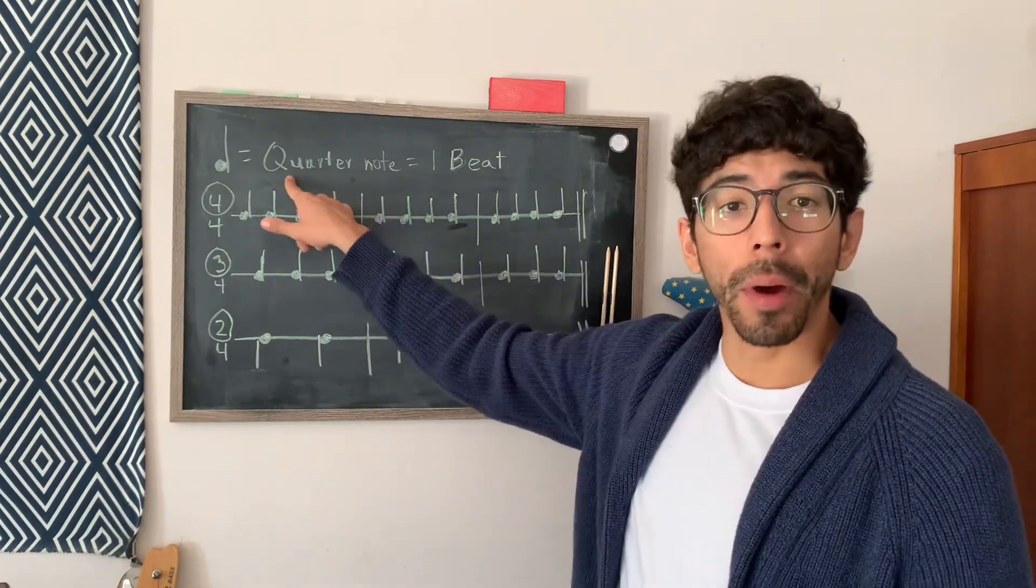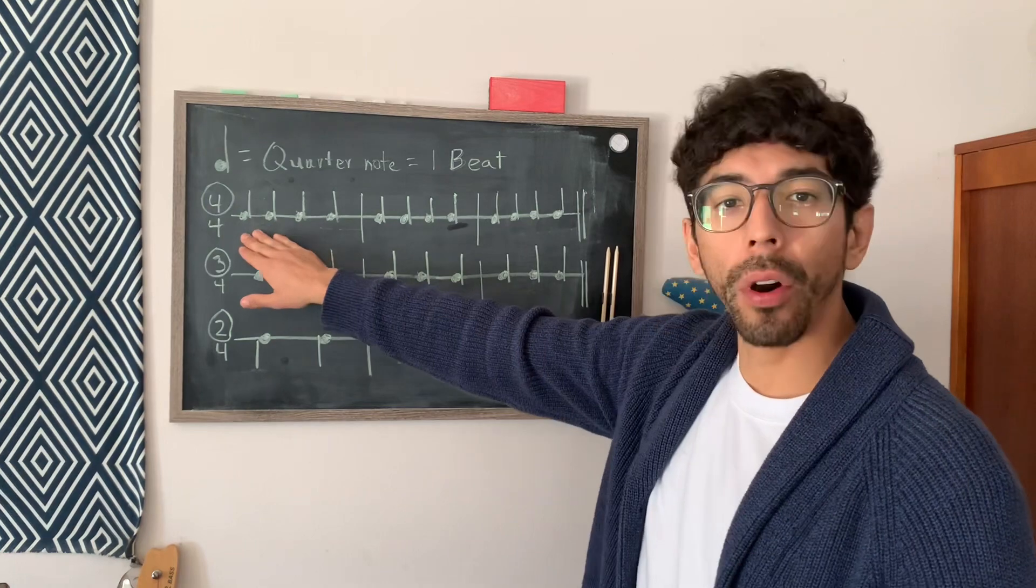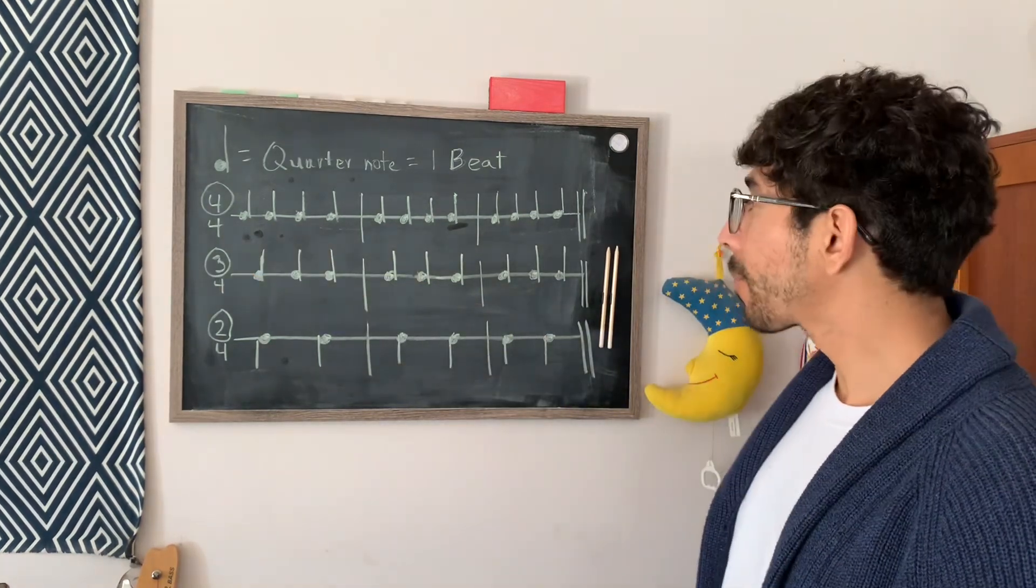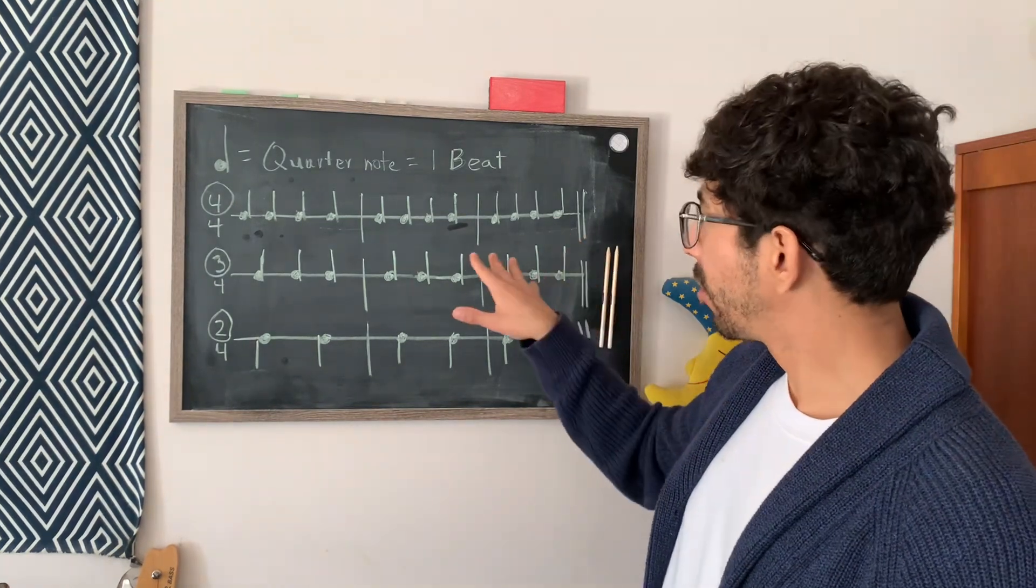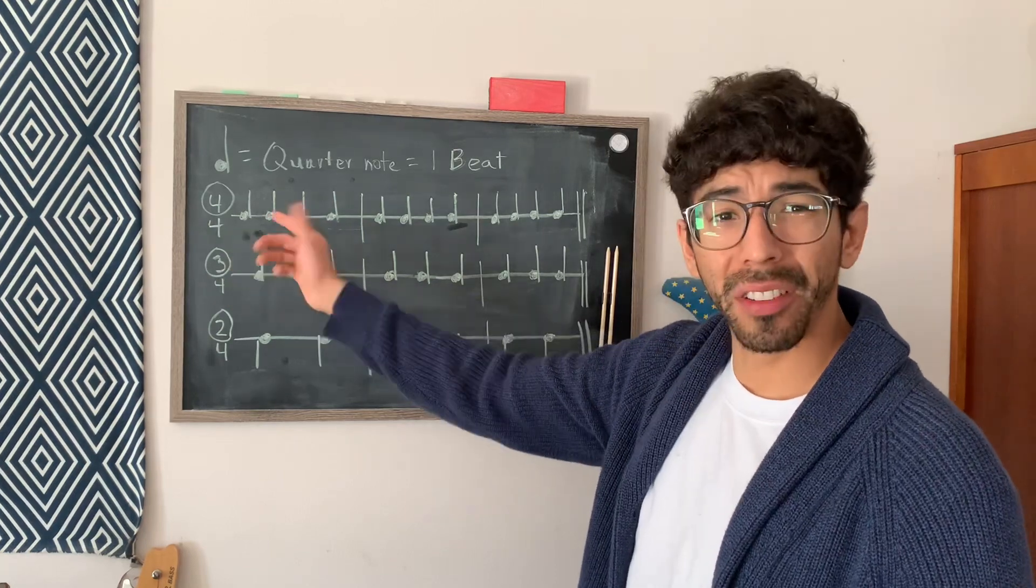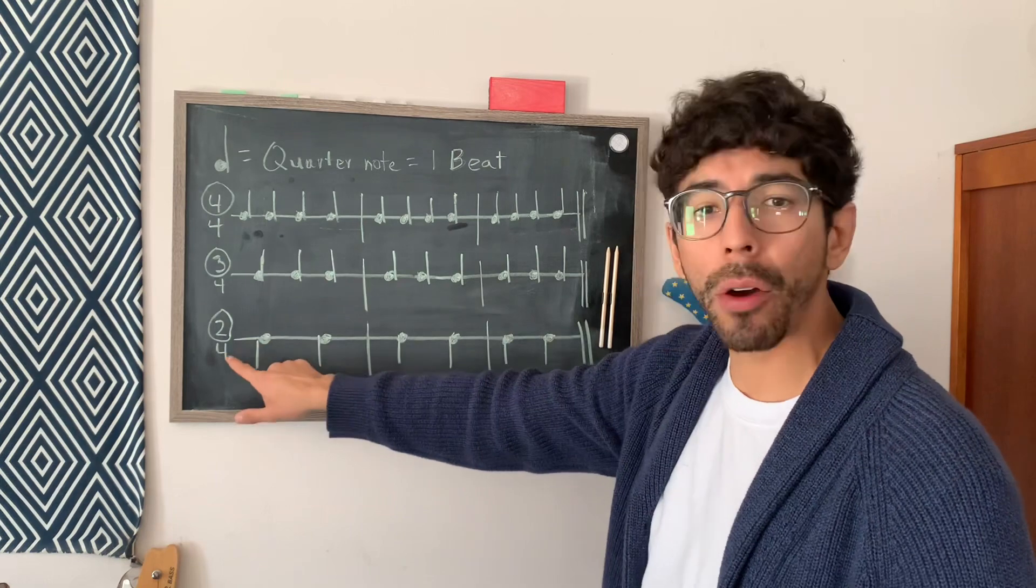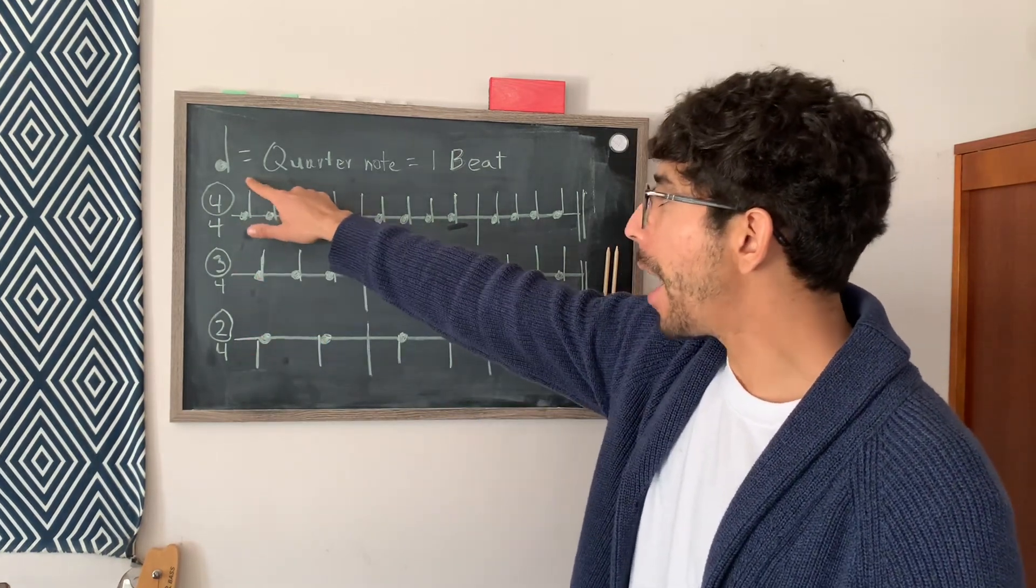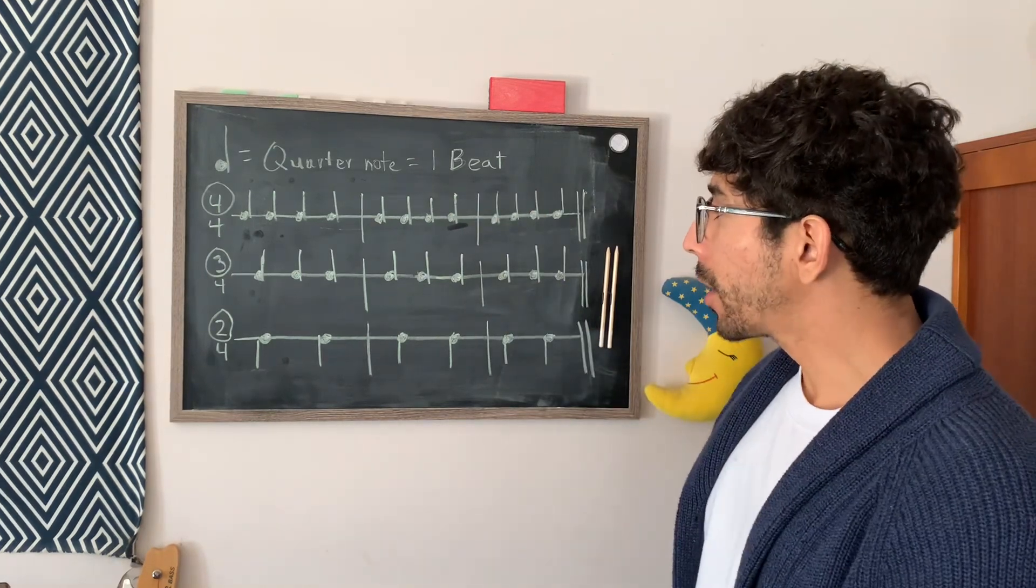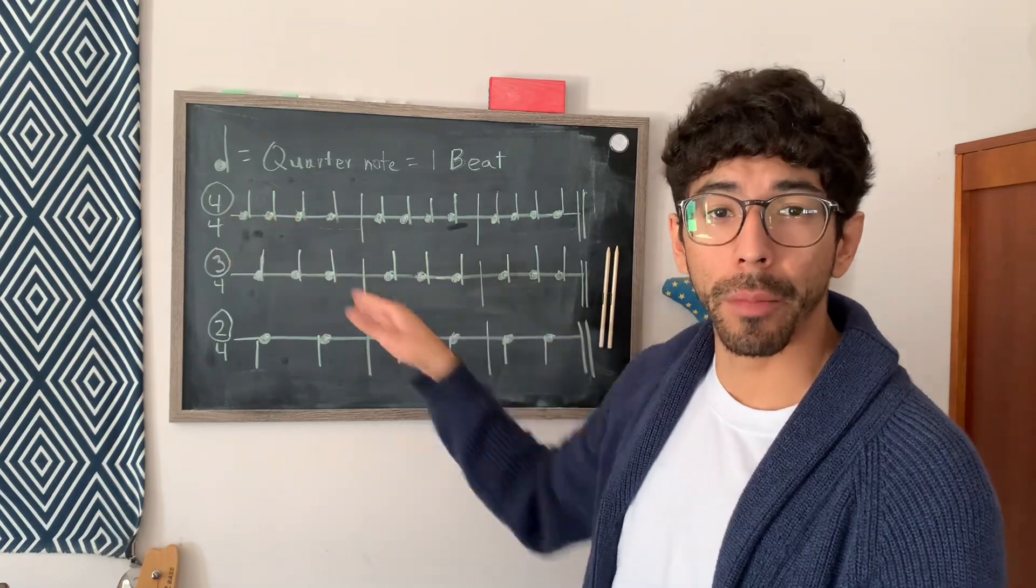So with the quarter note in mind, the most basic value is going to be 4-4, also known as common time. You might see it represented with a C. Well, today I'm just going to focus on the top number of the time signature. In a future episode, I'm going to explain what the bottom number is. But for now, we'll just keep it at 4. And for now, a quarter note will equal 1 beat.